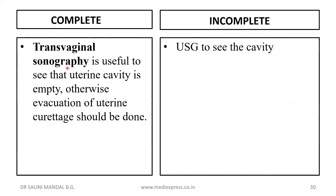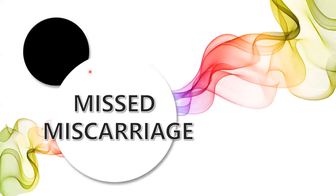Trans-vaginal sonography is useful to see whether the uterine cavity is empty or not. Otherwise, evacuation and uterine curettage should be done — this applies to both complete and incomplete abortion. USG is used to see the cavity.